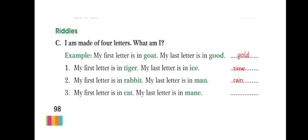Because first letter is rabbit, so, it can be rain, man, something like this. My first letter is in cat. My last letter is in Maine. So, what it could be? Yes, cake. So, last letter is E, K, C, Ake, Kate, Maine. That's all for today. Thank you and have a nice day.